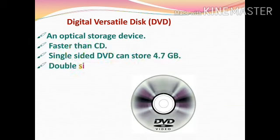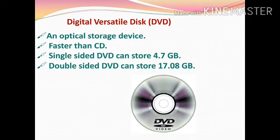The next secondary memory is digital versatile disk or DVD. It is an optical storage device which reads data at a much faster speed than a CD. A single-layer, single-sided DVD can store data up to 4.7 GB — around 6 times more than a CD. A double-sided, double-layer DVD can store data up to 17.8 GB — around 25 times that of a CD.